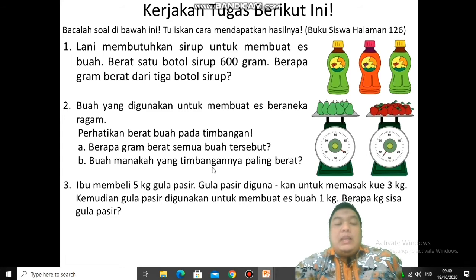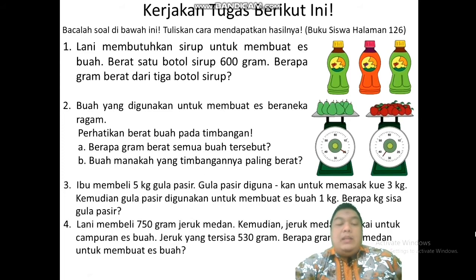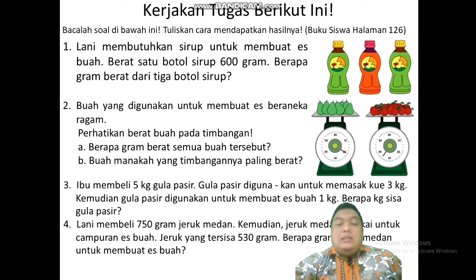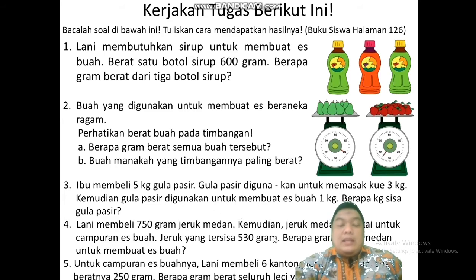Nomor 3: Ibu membeli 5 kilo gula pasir. Gula pasir digunakan untuk memasak kue 3 kilo, kemudian digunakan untuk membuat es buah 1 kilo. Berapa kilogram sisa gula pasir? Sisa berarti dikurangi semuanya — satuan sudah sama, tinggal langsung dikurangi. Nomor 4: Lani membeli 750 gram jeruk medan, kemudian jeruk yang tersisa 530 gram setelah dipakai untuk campuran es buah. Berapa gram jeruk medan untuk membuat es buah? Tinggal dikurangi saja — satuan sudah sama.